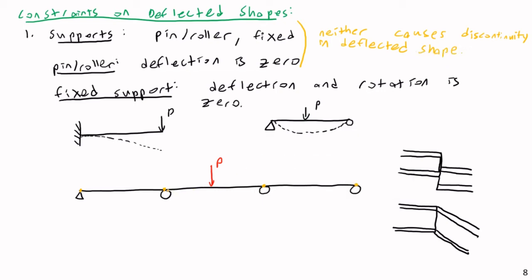So on a multi-span continuous beam, the mid-span is going into positive bending because of a positive load above it. Since I can't have any sudden changes in the beam's geometry, the deflection can't reverse direction arbitrarily. On a multi-span continuous beam with a point load in the middle, I will have positive bending in the interior span and negative bending on the exterior spans. This comes down to the fact that deflection and rotation must be continuous — as long as it's the same beam all the way across.